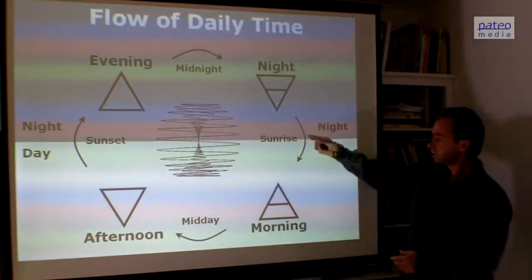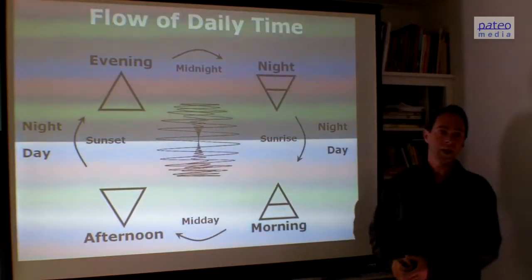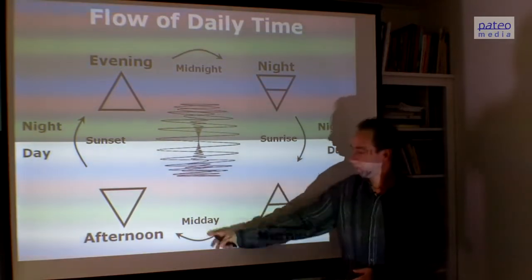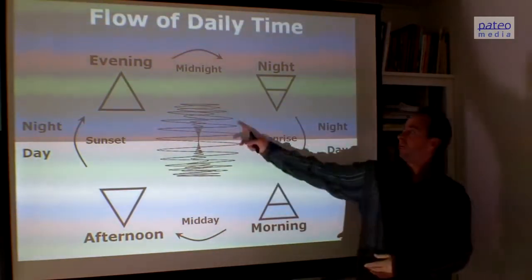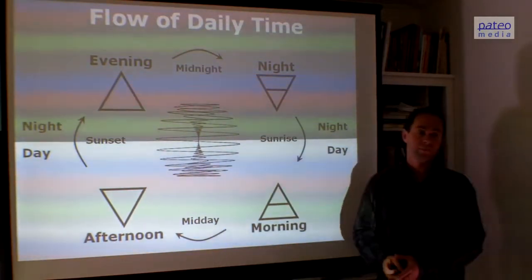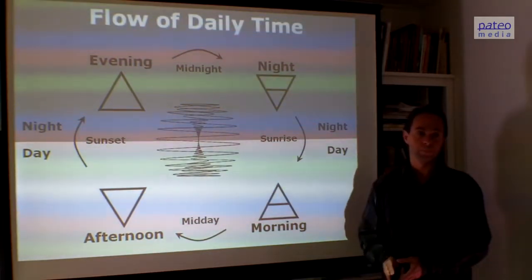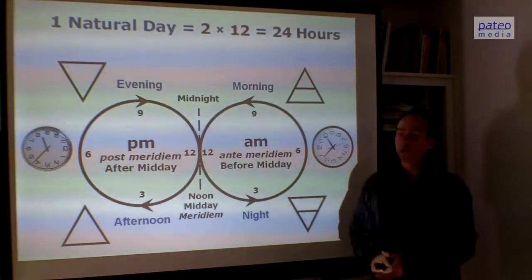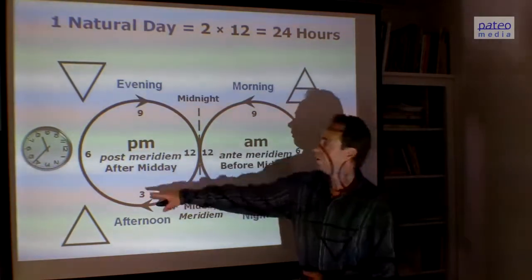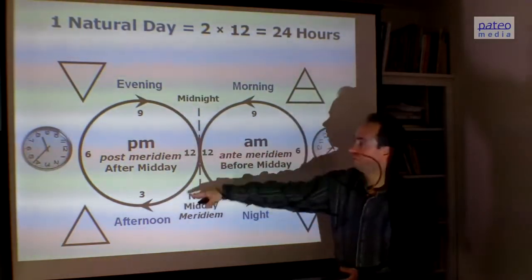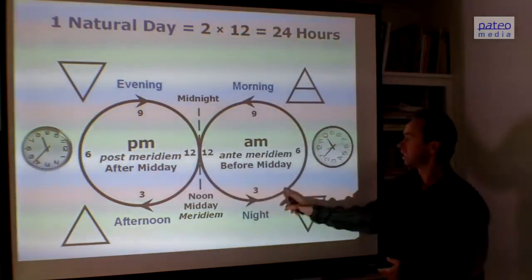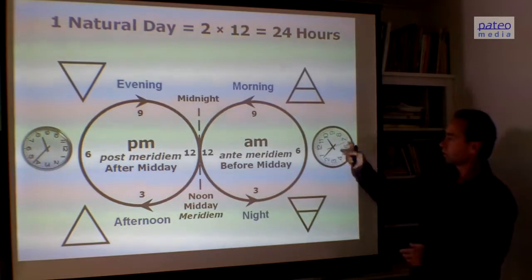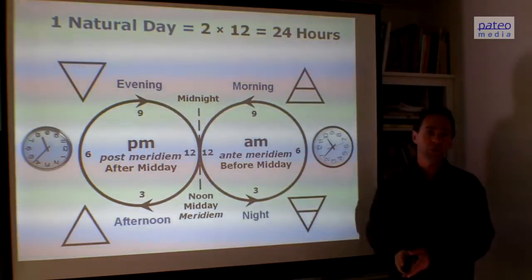The light part is the day part and the dark part is the night part. In the middle of the day part, we find the midday. In the middle of the night part, we find the midnight. We divide that into 2 times 12 hours, 24 hours in total. This is going clockwise. This is going counterclockwise. That's why you see the hands of this clock go counterclockwise.